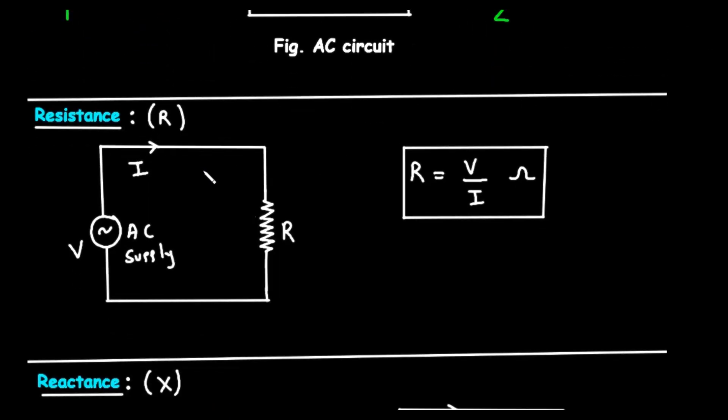Let's move to our first section, resistance, represented by the letter R. Resistance is a concept you might already be familiar with. It is the opposition to the flow of electrical current. Think of it like friction. When current flows through a component with resistance, electrical energy is converted into heat.